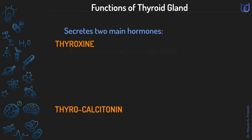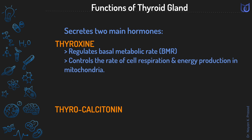Thyroxine regulates the basal metabolic rate of the body. It controls the rate of cell respiration and energy production in mitochondria. Thus it controls the physical, mental, and sexual growth of the body.